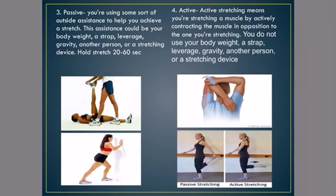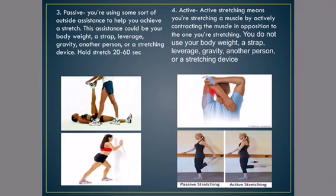Number three is passive stretching, where you're using some sort of outside assistance to help you achieve a stretch — either a person or a wall. And last but not least, number four: active stretching. It means you're stretching a muscle by actively contracting the muscle in opposition to the one you're stretching. You do not use your body weight, a strap, leverage, gravity, another person, or et cetera to do this type of stretching. So you can see that this person is stretching their tricep muscle but contracting their bicep muscle in order to do that.